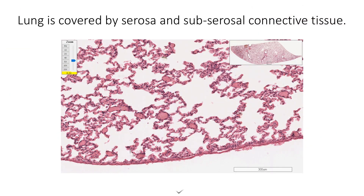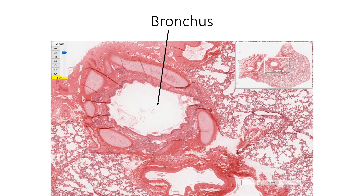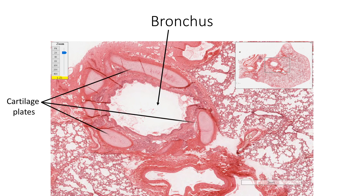Lung is covered by serosa, which is simple squamous mesothelium of visceral pleura and sub-serosal connective tissue. A section of lung usually shows the presence of one or more bronchi of various sizes. A bronchus can be identified by the presence of cartilage plates in its walls.